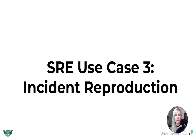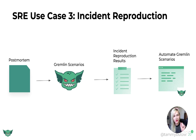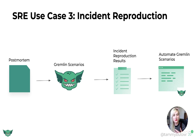Now let's look at SRE use case number three: incident reproduction. What we do is take the post-mortem, create a Gremlin scenario, and actually reproduce the incident using Gremlin. We run that incident again after completing those top-priority action items, and make sure that if this incident did happen again we wouldn't have a high severity incident — customers wouldn't be experiencing failure, we would actually be able to gracefully degrade and handle the issue.